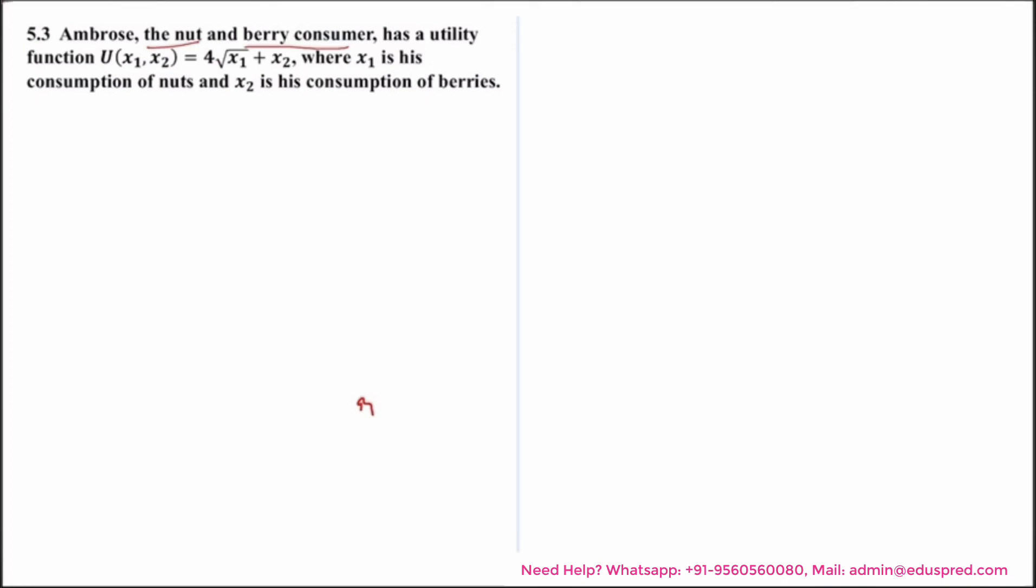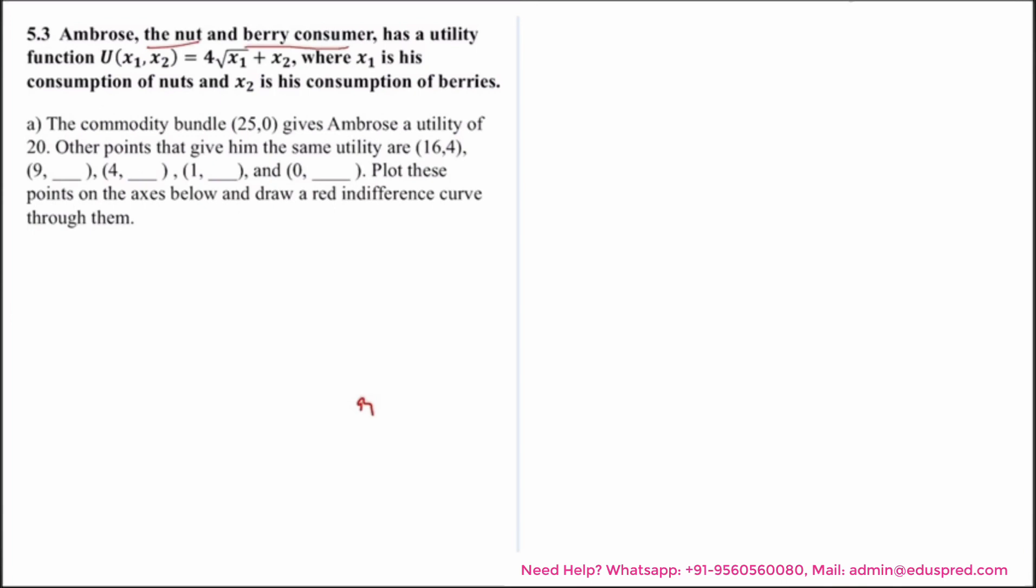With this information we are asked: the commodity bundle (25, 0) gives Ambrose a utility of 20. Other points that give him the same utility are (16, 4), (9, blank), (4, blank), (1, blank), and (0, blank). Plot these points on the axis below and draw a red indifference curve through them.